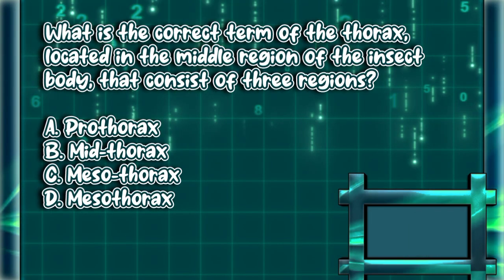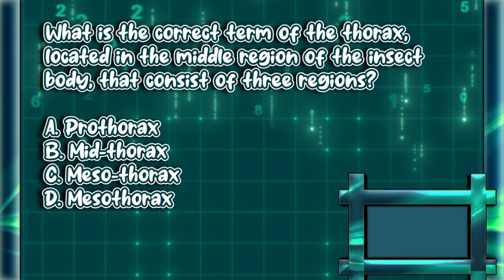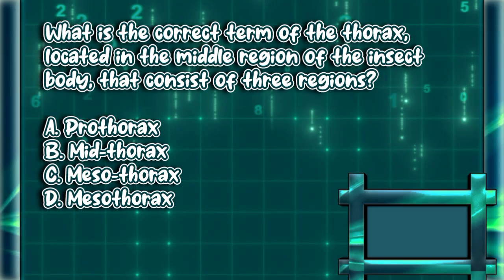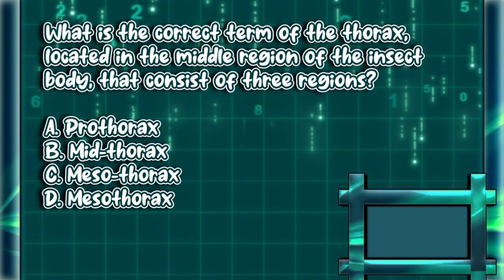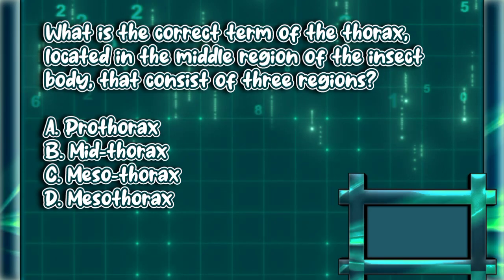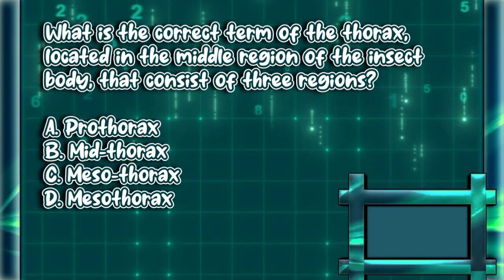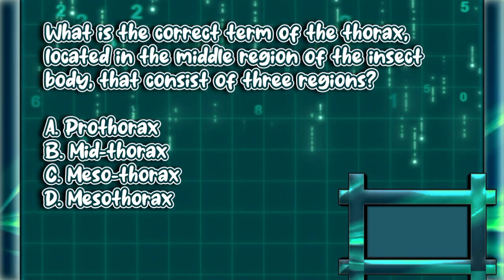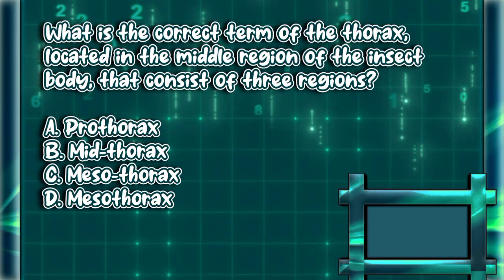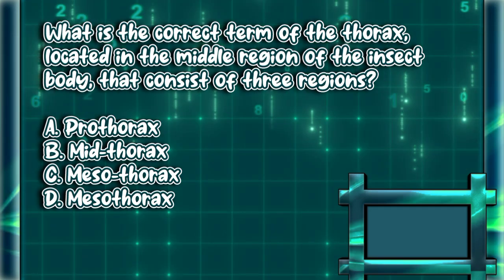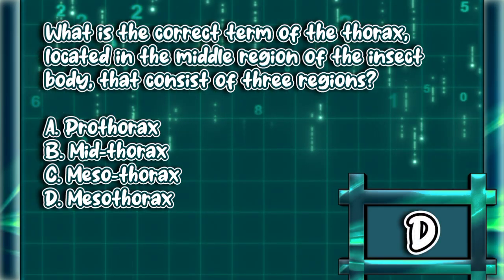What is the correct term for the thorax located in the middle region of the insect body, consisting of three regions? a) prothorax, b) mid-thorax, c) mesothorax, d) mesothorax. The answer is letter D.